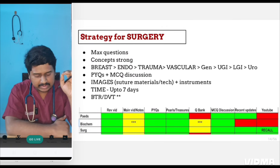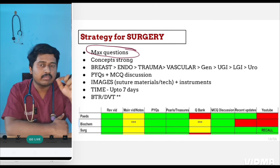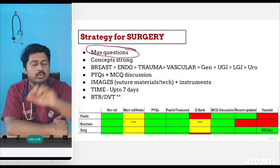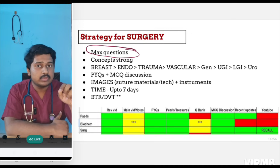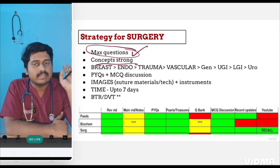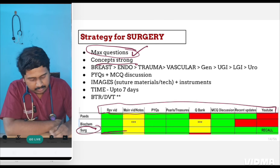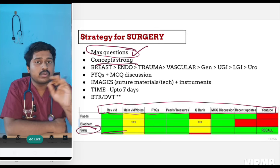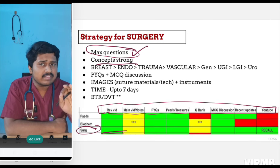The strategy for surgery is simple. Maximum questions are asked in NEET PG from surgery — from 12–13 questions in 2018–19, up to 24–25 questions in 2023. Surgery is one of the top subjects in NEET PG. You have to make your concepts very strong. Watch every revision video, because you can't afford to lose anything — out of the upcoming 24–25 questions, you must answer at least 17 or 18 from revision videos.